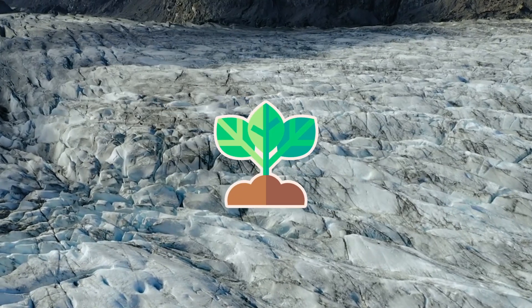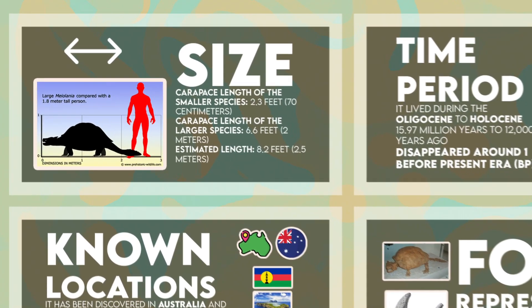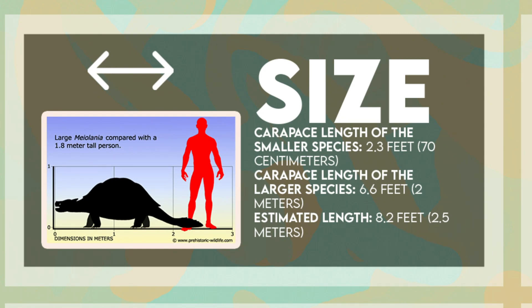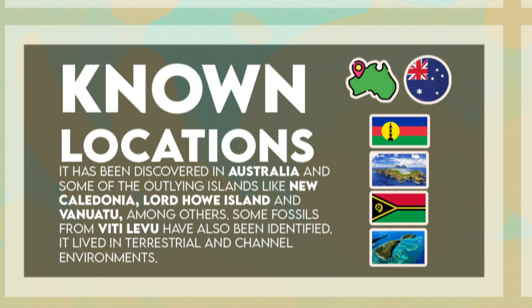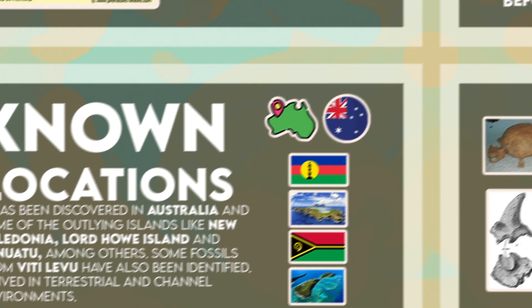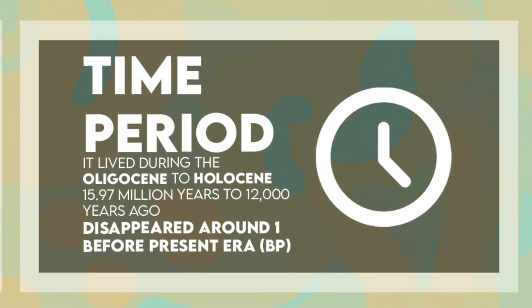It was a herbivore. For smaller species found on smaller islands, like Myolania makagi, the carapace length was about 2.3 feet or 70 centimeters. On the other hand, carapace length for some individuals of larger species from the main continent could approach 6.6 feet or 2 meters. Average total body length for most individuals from the main Australian continent was about 8.2 feet or 2.5 meters. It has been discovered in Australia and outlying islands like New Caledonia, Lord Howe Island, and Vanuatu, among others. Some fossils from Bedi-lebu have also been identified. It lived in terrestrial and coastal environments, during the Oligocene to Holocene, approximately 15.97 million years to 12,000 years ago. It disappeared around 1,000 years before present.